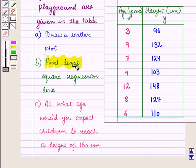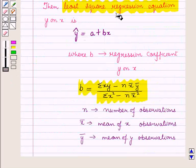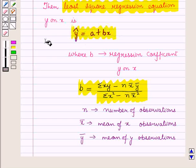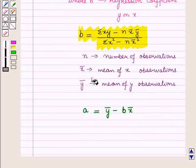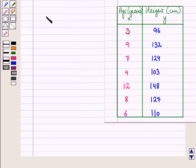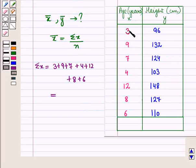In the second part we have to find the least square regression line. From the key idea we know that the least square regression line y on x is given by y-hat equals a plus bx. We have to find the values of a and b using the results given in the key idea. First of all we have to find the values of x-bar and y-bar.